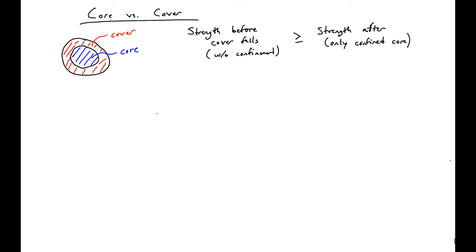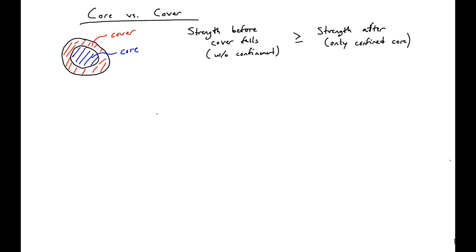This leads us to some of the takeaways. We have three main takeaways from the confinement discussion so far. The first is that confinement will happen — if you have reinforcement surrounding some core, there will be confinement in your section.